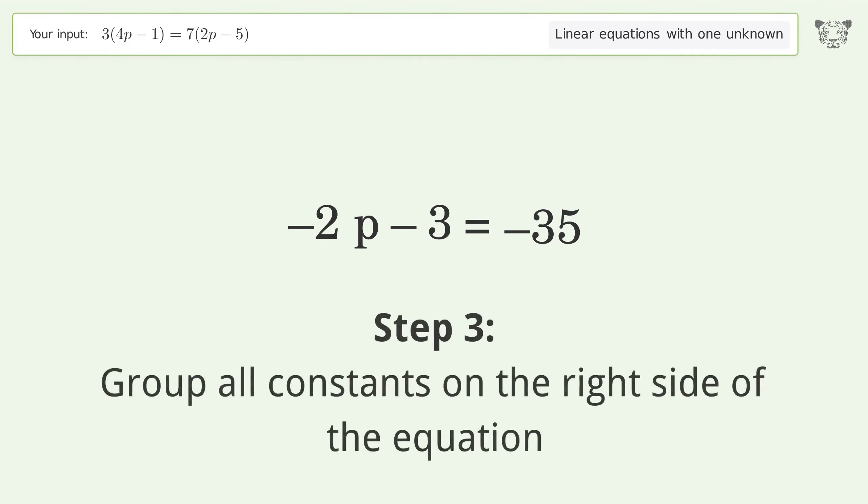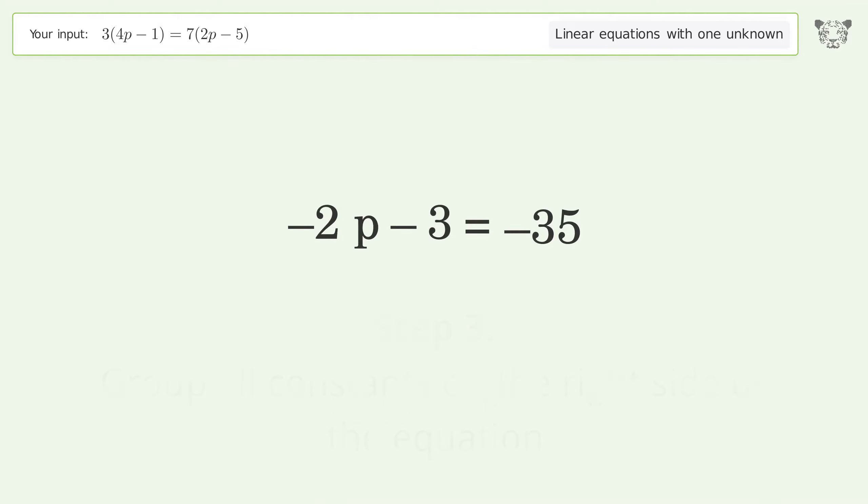Group all constants on the right side of the equation by adding 3 to both sides. Simplify the arithmetic.